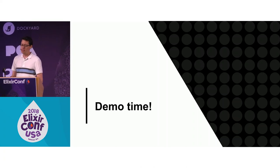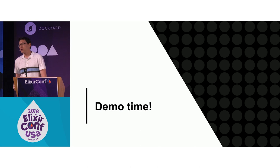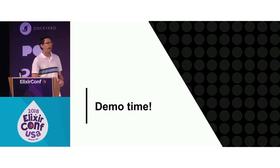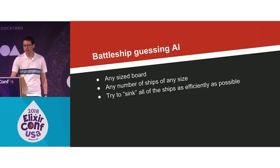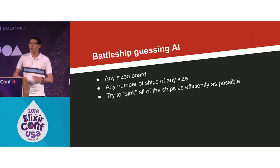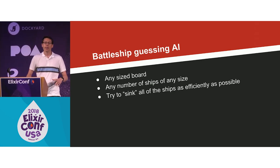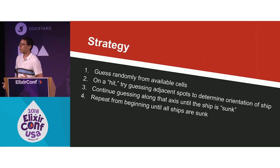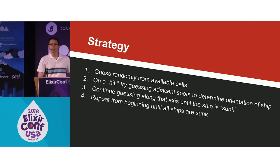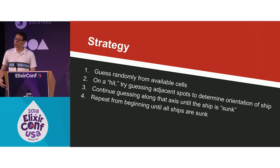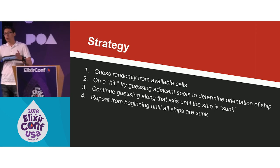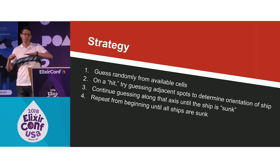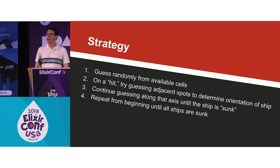Now it's demo time. I wanted to make a demo that would showcase a behavior tree in action, so the idea I had was an AI that can play Battleship — the game where you have a grid, put ships on it, and try to guess where they are and sink them all. A basic strategy: begin by randomly guessing. If you hit a ship, figure out its orientation. When you know the orientation, move in one direction and either sink it or, if you miss, move the other direction until completely sunk. Then start over again.